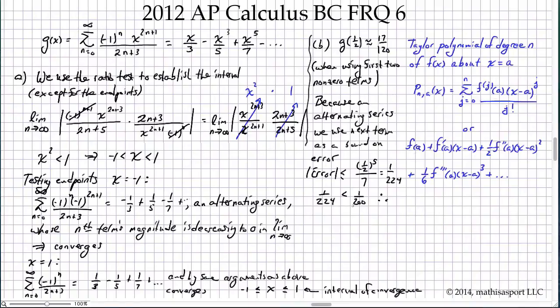Last thing is to write the first three non-zero terms and the general term of the McLaurin series for g prime. G prime, I can simply take the term by term derivative to find g prime. Take derivatives term by term. I'll just take the function that they've given us: x/3 minus x³/5 plus x⁵/7, and I'll write d/dx of that.